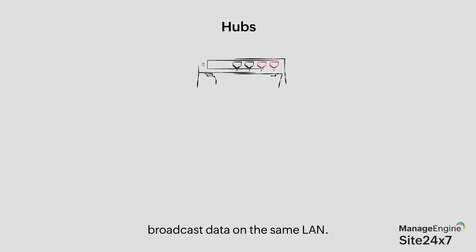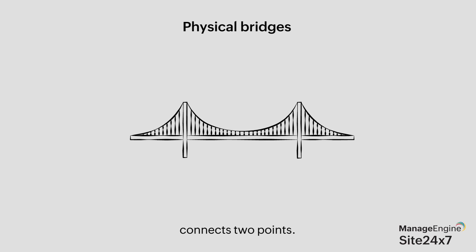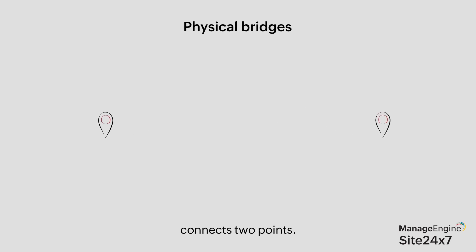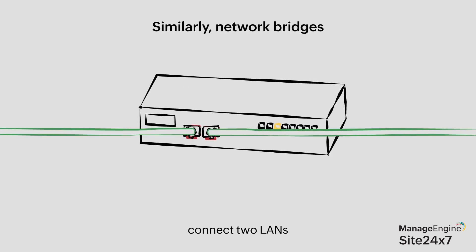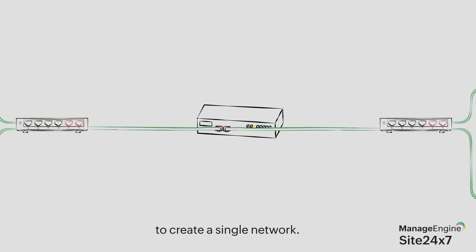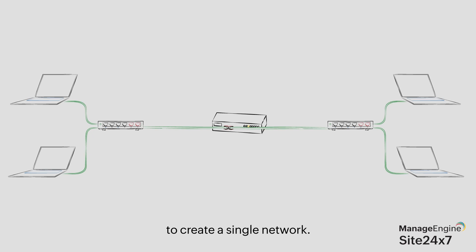Next up are bridges. Like physical bridges connecting two geographical points, bridges in networks connect two LANs to create a single aggregate network.